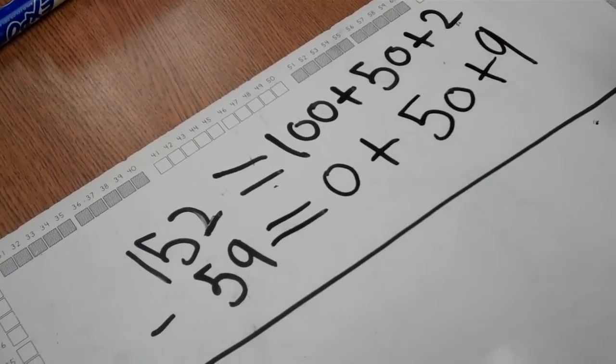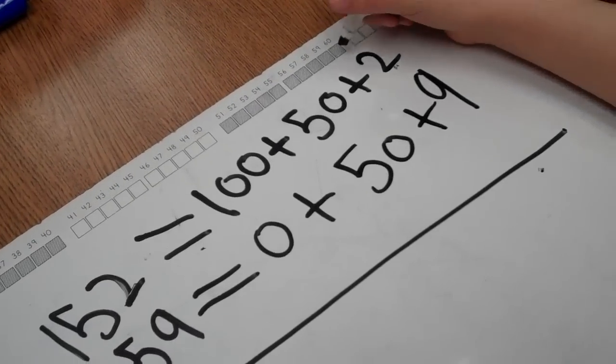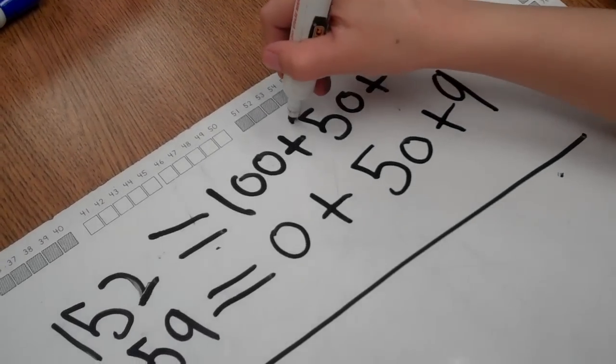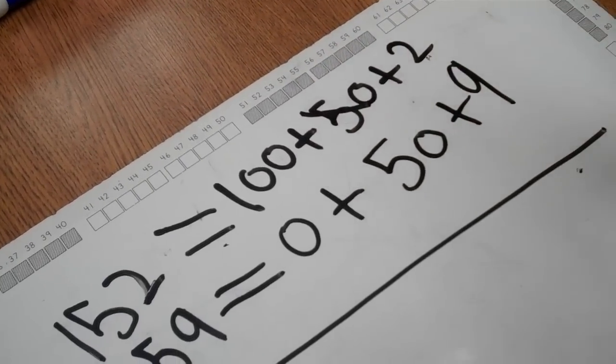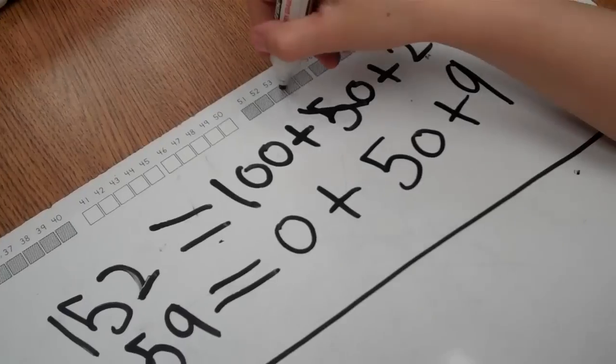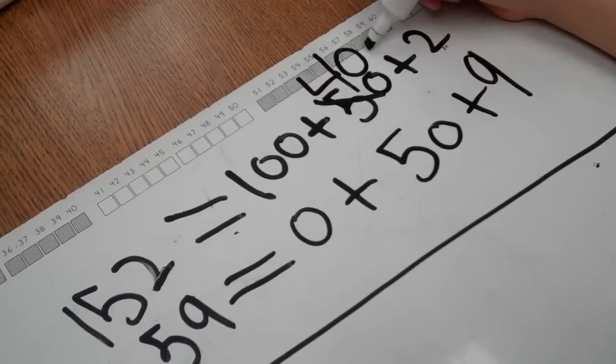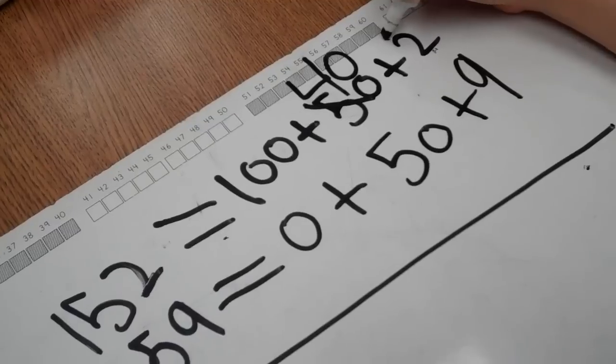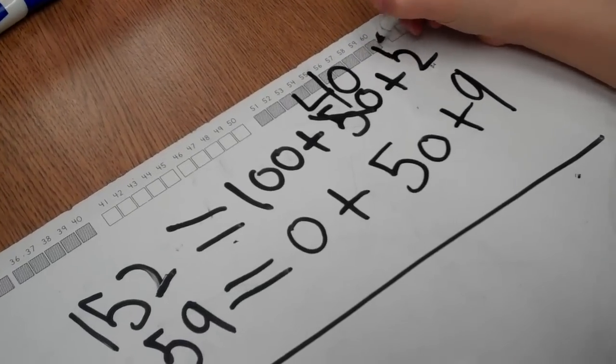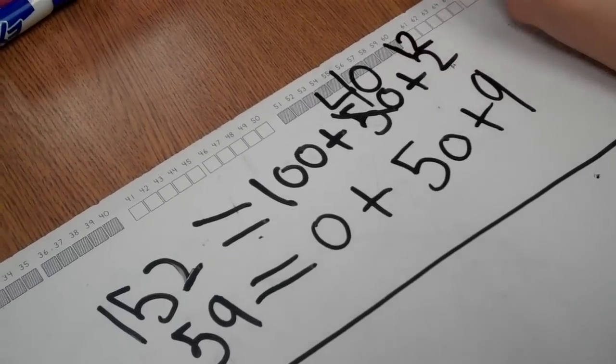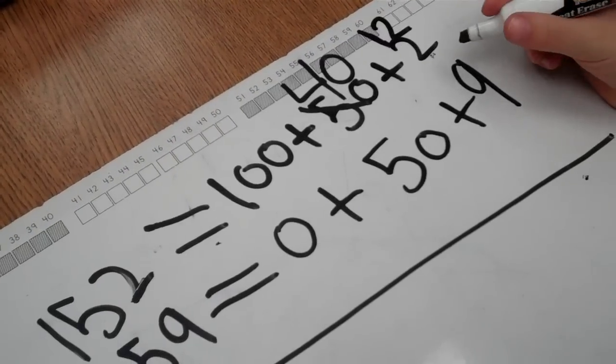This strategy allows students to think about each place value more carefully. Now the student will look and see if they need to do any ungrouping to subtract. 2 minus 9. Yes, we need to ungroup. So we're going to take a 10. Now we have 40. And this new 10 we ungroup and add to 2. Now we have 12 ones. We can say 12 minus 9.